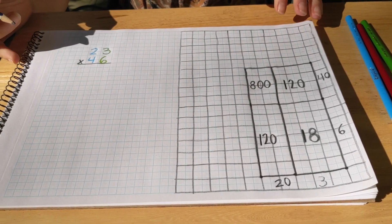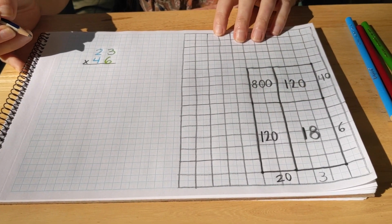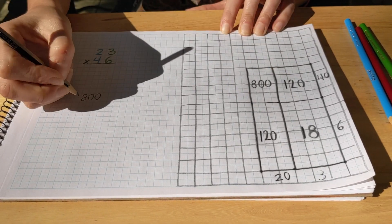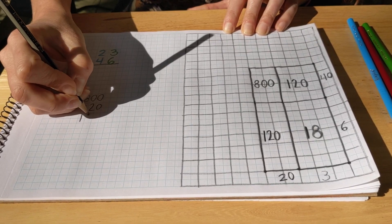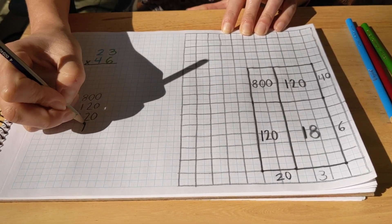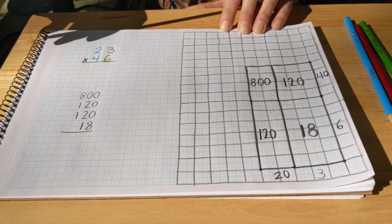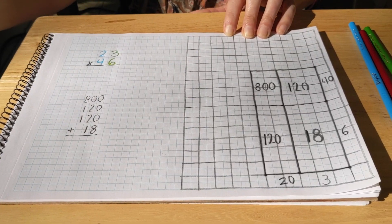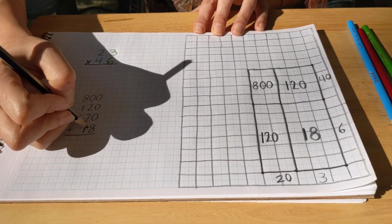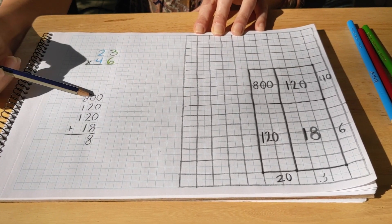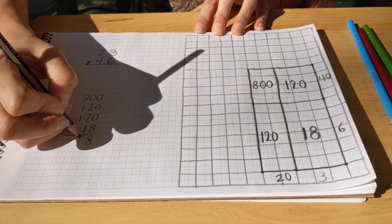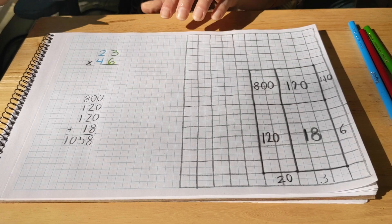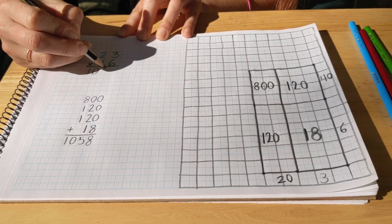So now we're going to add up everything that we've made here. So we have 800. What's the next smallest number? Oh, we have two 120s and we have an 18. Make sure you're lining up your categories. Make sure your units line up with units, tens with tens and hundreds with hundreds. That's really going to help when you're adding them up. So zero plus zero plus zero plus eight is eight. Zero. Two plus two is four, plus one is five. Eight plus one is nine, plus one is ten. So our answer here is 1058.